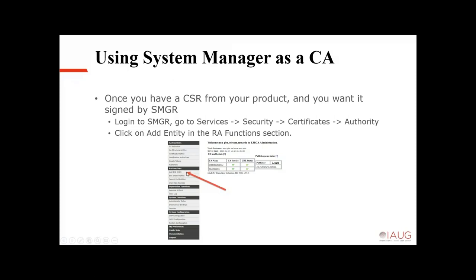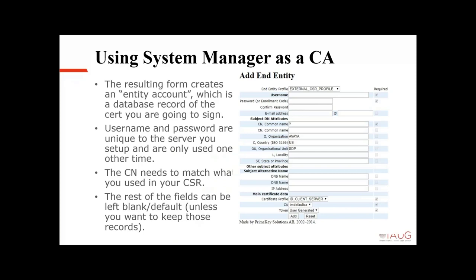When you go to Services, Security, Certificates, Authority in System Manager, you'll be in the EJBCA application. Along the left-hand side there's an option under RA Functions called Add an Entity. These menu items don't speak plain English, but what we're doing is creating a login that we can use to sign a certificate. When you click on that, you get a form that looks similar to a CSR form. All we're doing is creating a login and password and telling System Manager these are the things — essentially a database entry so System Manager can track the different CSRs. The username, password, and common name are the key required fields. Make sure the certificate profile is set to ID Client Server and the CA is the one you've set up.